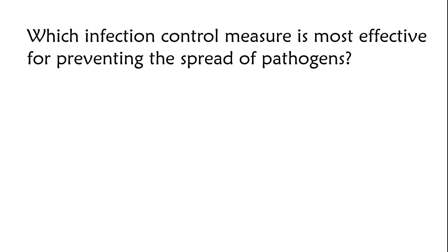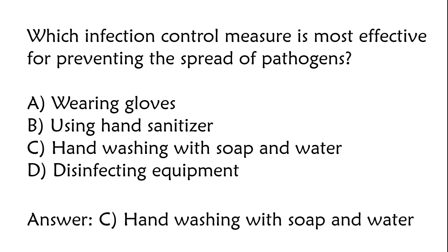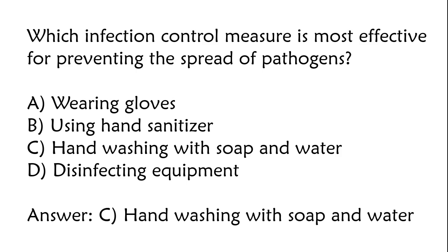Which infection control measure is most effective for preventing the spread of pathogens? Wearing gloves, using hand sanitizer, hand washing with soap and water, disinfecting equipment. The correct answer is Option C: hand washing with soap and water.